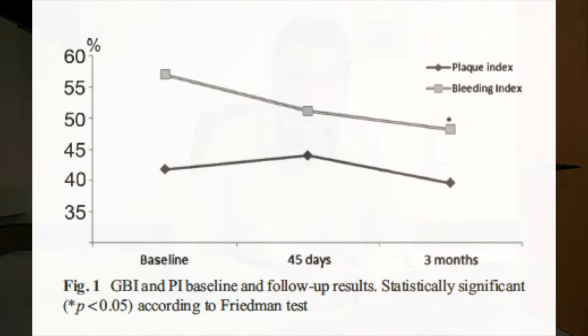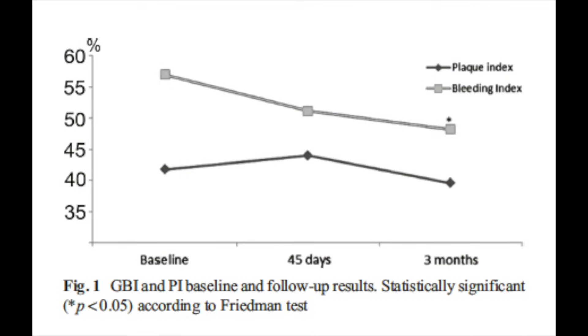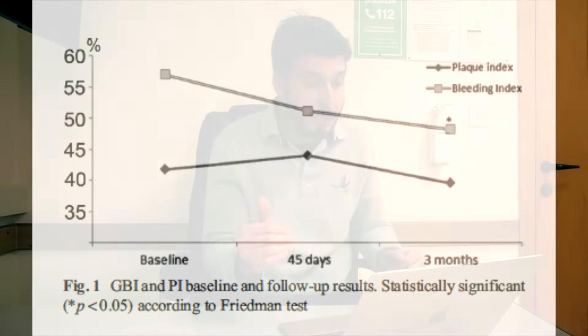The p-value of the Friedman test is shown in the graph. They used a line graph rather than a bar graph because results are shown over time — baseline, after 45 days, and a three-month follow-up. This evolution over time is correctly represented using a line graph.